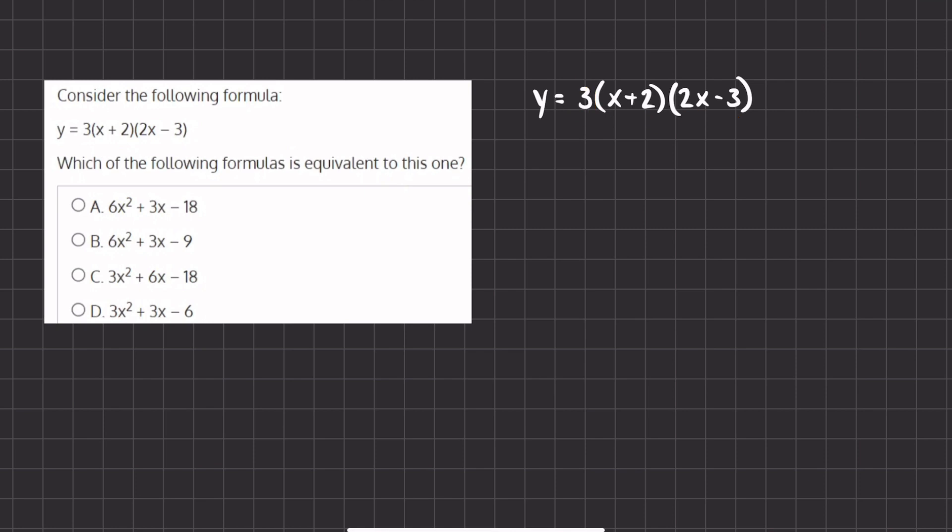Let's begin by foiling. We have to take this first term here and multiply by the two terms of the second parentheses. So let's take x and multiply it by 2x and we get 2x squared. Now we will multiply x times negative 3 and we will get negative 3x.